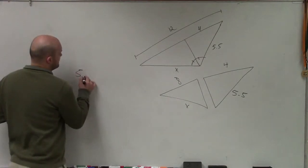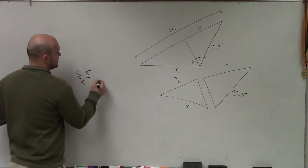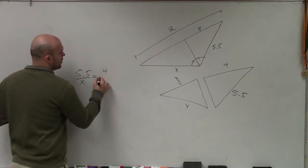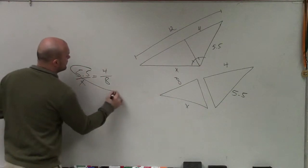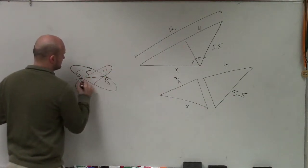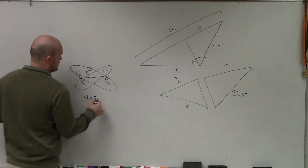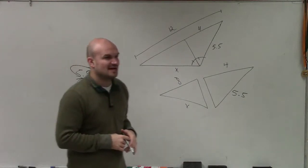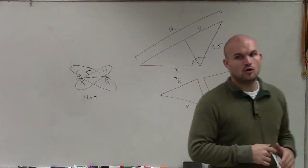Now, we cross-multiply, 4x equals 5.5 times 8, which is 44.